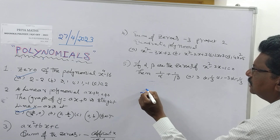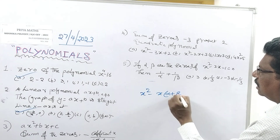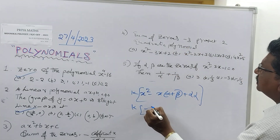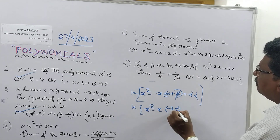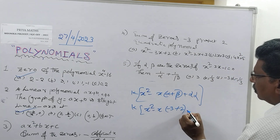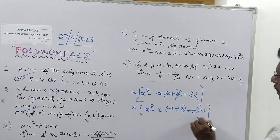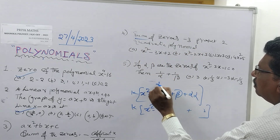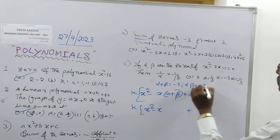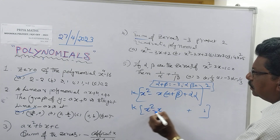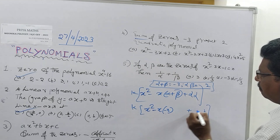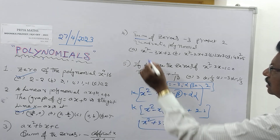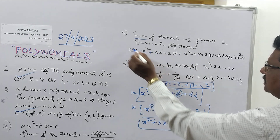The polynomial formula is: K times [X squared minus X(alpha + beta) + alpha·beta]. Substituting: alpha plus beta = minus 3, alpha·beta = 2. So we get K times [X squared minus X(minus 3) + 2], which gives X squared plus 3X plus 2. If the sign is plus, this is the right option.